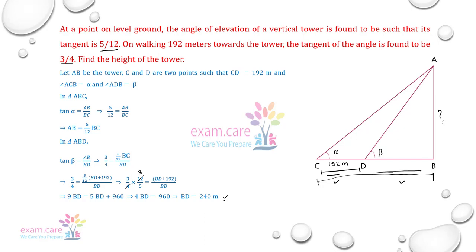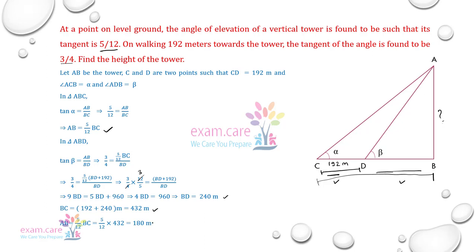BD = 240 meter आया। तो BC = CD plus BD = 192 plus 240 = 432 meter। और AB is equal to 5 by 12 into BC = 5 by 12 into 432 = 180 meter। Therefore, the height of the tower is 180 meter।